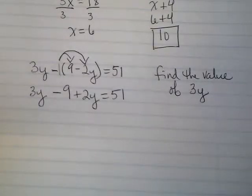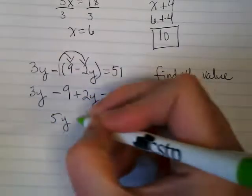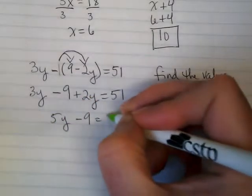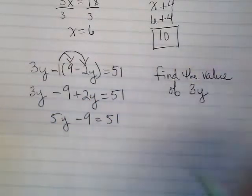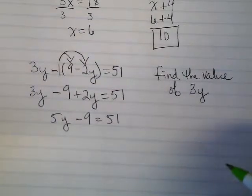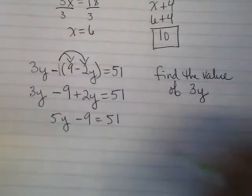I got to combine like terms before I can solve. I have 3y and 2y, which are 5y. So I've got 5y minus 9 equals 51. What am I going to do with that negative 9? Add 9.